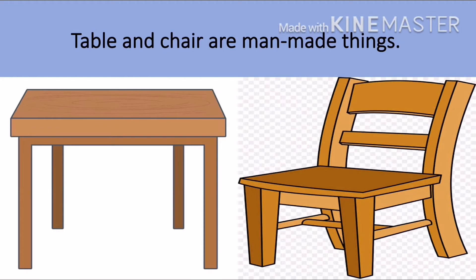Table and chair are man-made things. Nature gives us wood, and we human beings take that wood and make it into objects like table and chair. So table and chair are known as man-made things.